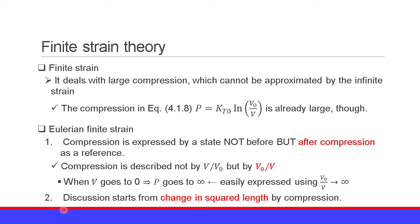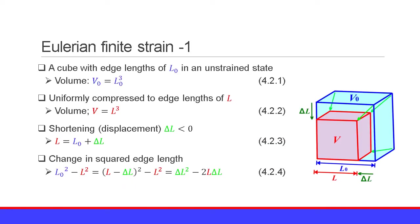The second point is that the discussion starts from the change in squared length by compression. Let us consider a cube with an edge length of L0 in an unstrained state. Volume V0 is, of course, L0 cubed.